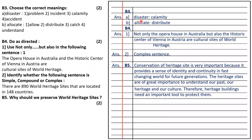B3: choose the correct meaning. Disaster is calamity and allocate is distributed. B4: not only the opera house in Australia but also the historic centre of Vienna in Austria are cultural sites of world heritage. Second, identify the type of sentence — it is a complex sentence.